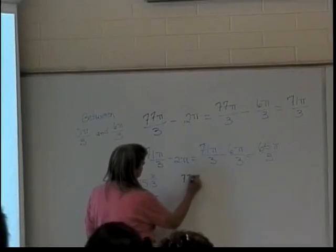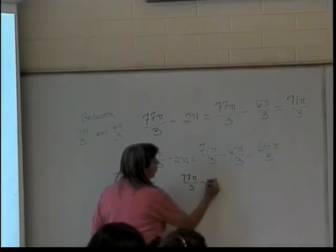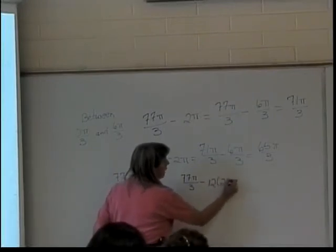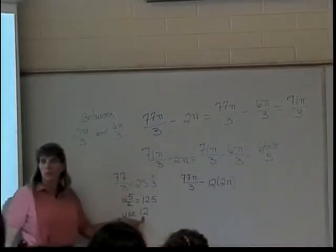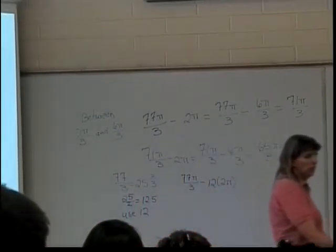So I'm going to go back to my original 77π over 3 and subtract off 12 times 2π, because that's 12 full times around the circle. Okay, so let's figure out how many that is.